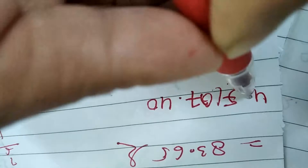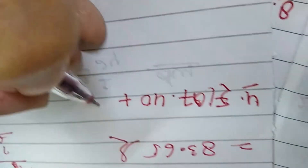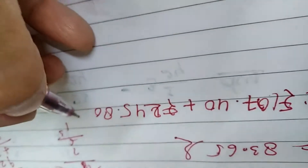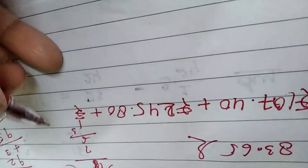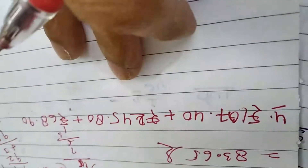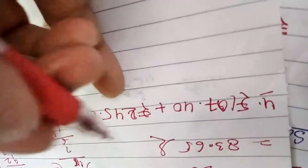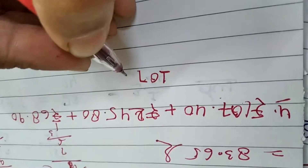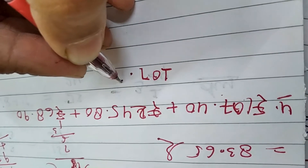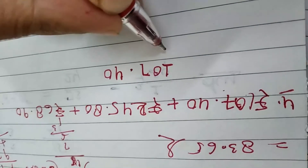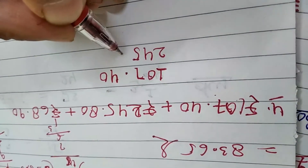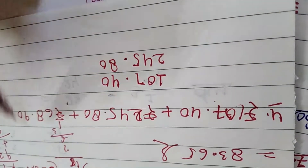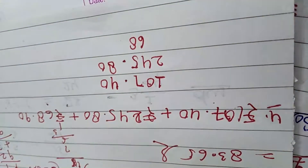Question 4: Add Rs. 107.40, plus Rs. 245.80, plus Rs. 68.90. We put all three numbers in columns. Point under point, digit under digit. If there is no extra digit, we place a zero. Then we do the addition.